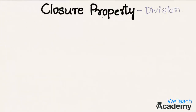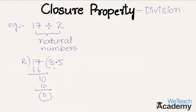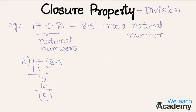Now let us discuss closure property on division. Consider two natural numbers: 17 divided by 2. Performing the division — 2 goes into 17 eight times giving 16, remainder 1; adding a decimal point and a zero gives 10, and 2 goes 5 times — so 17 divided by 2 equals 8.5, which is not a natural number. Hence closure property is not applicable for division, and it is not a closed operation.